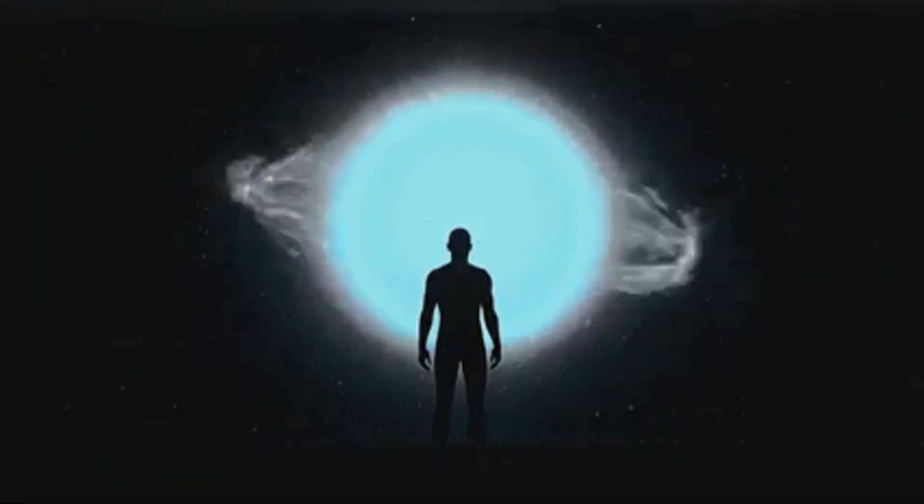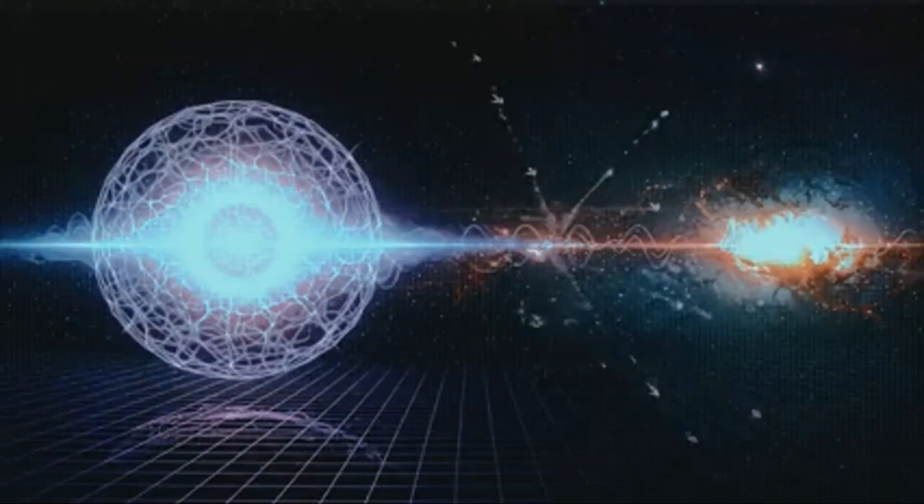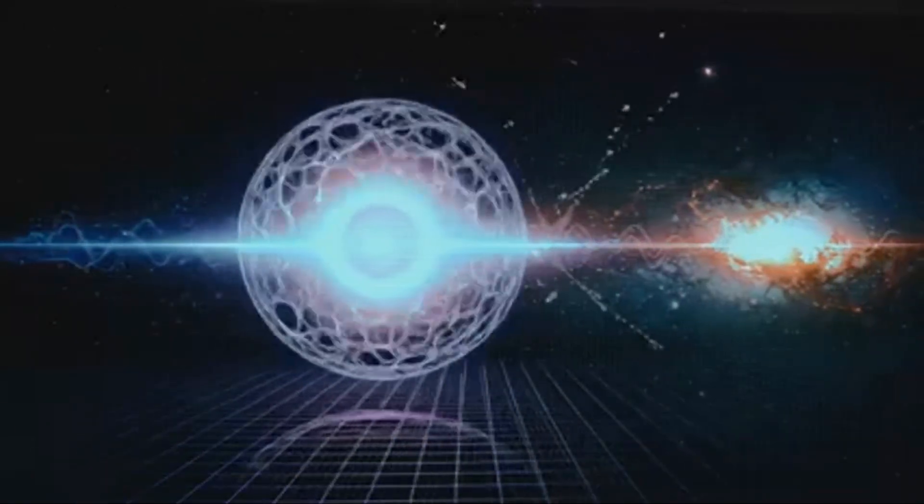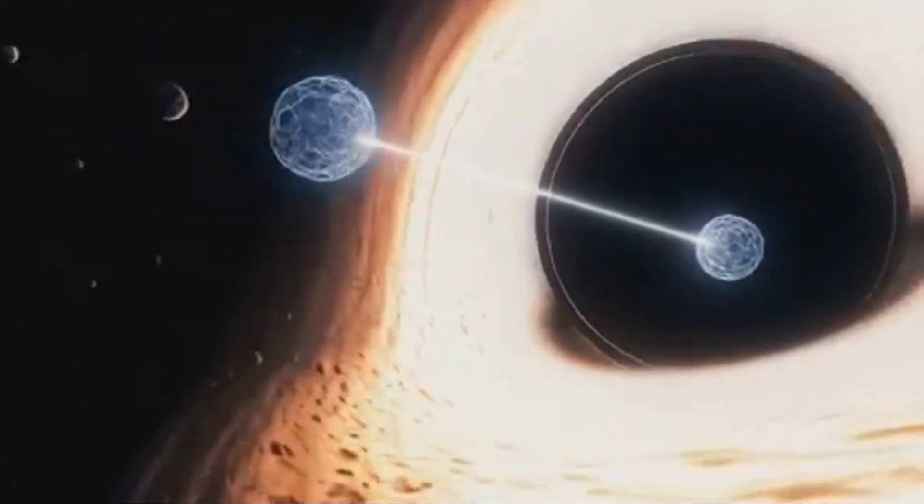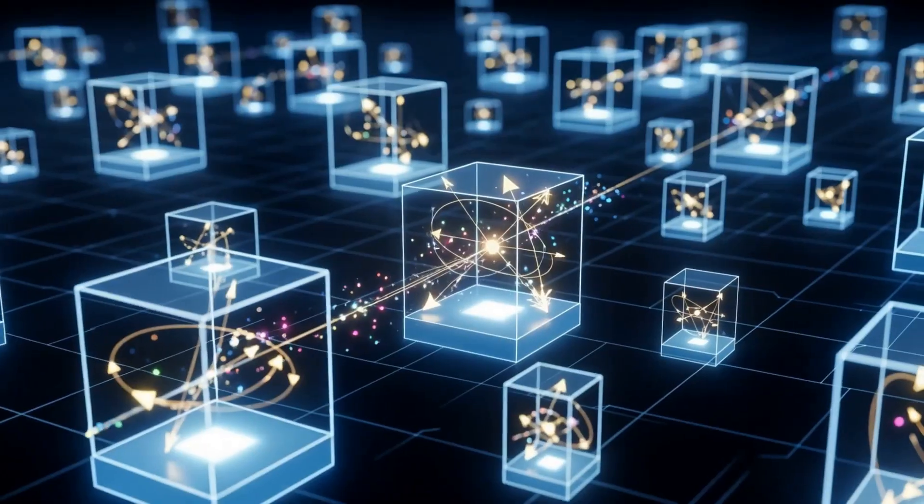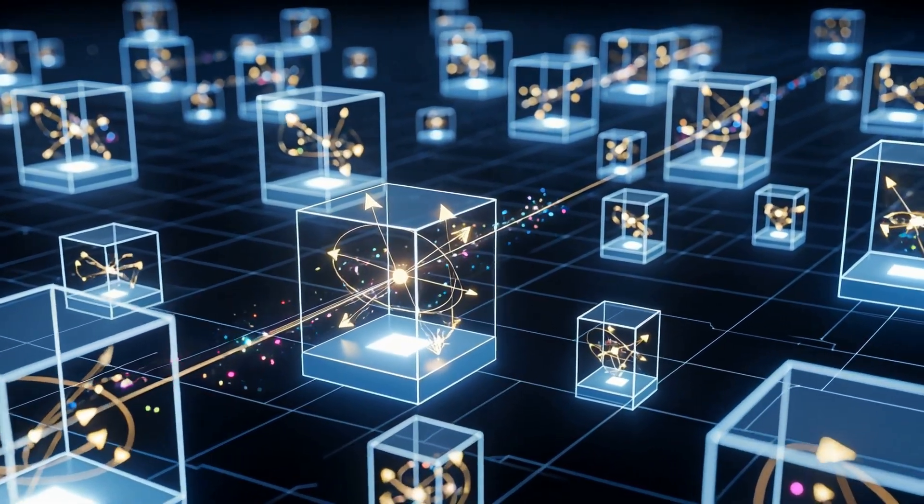I am the architect. Picture space and time as a giant invisible graph paper made of the tiniest squares imaginable. Each square is a qubit holding a spinning arrow of light, called a quantum state vector.